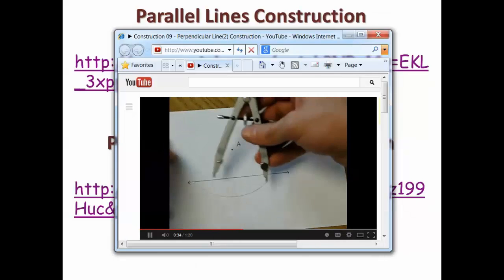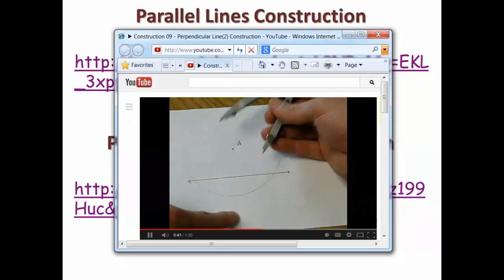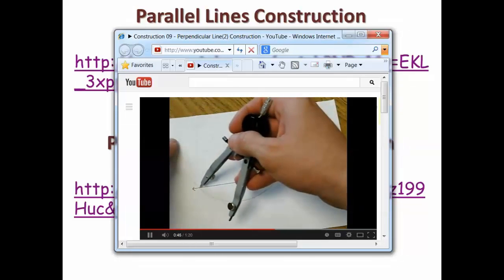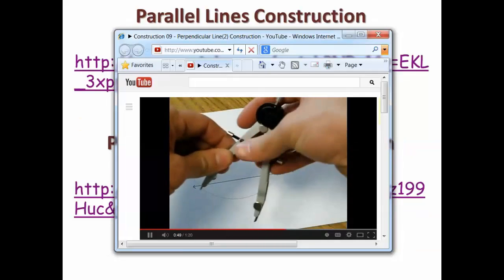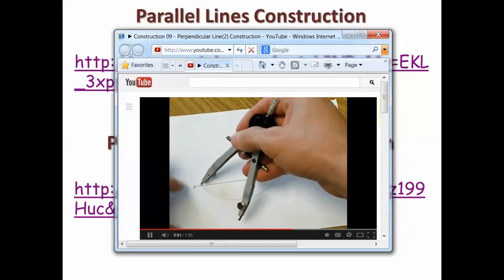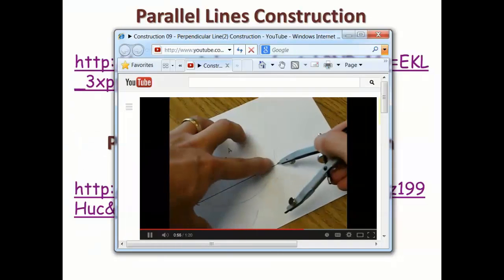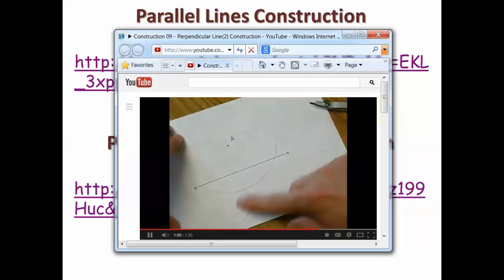Now we're going to use those two points of intersection to construct two more arcs out here in the open space. The radius really doesn't matter as long as you can get them to cross each other. I'm going to open mine up just a little bit and from each side I'm going to make a mark and I'm looking for an X. There's my X.